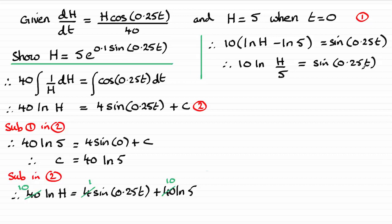And now I could divide both sides by 10. And I can see we're getting closer now. We've got the natural log of H over 5 then equals 1 divided by 10 which is 0.1. So this is looking good. Sine of 0.25t.